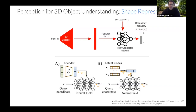Another way to learn these representations is to use an encoder at the input. For a given modality — say partial point clouds or an image — you output a latent vector z, which is then passed to a network f-theta that outputs either occupancy (zero or one) or a signed distance function.